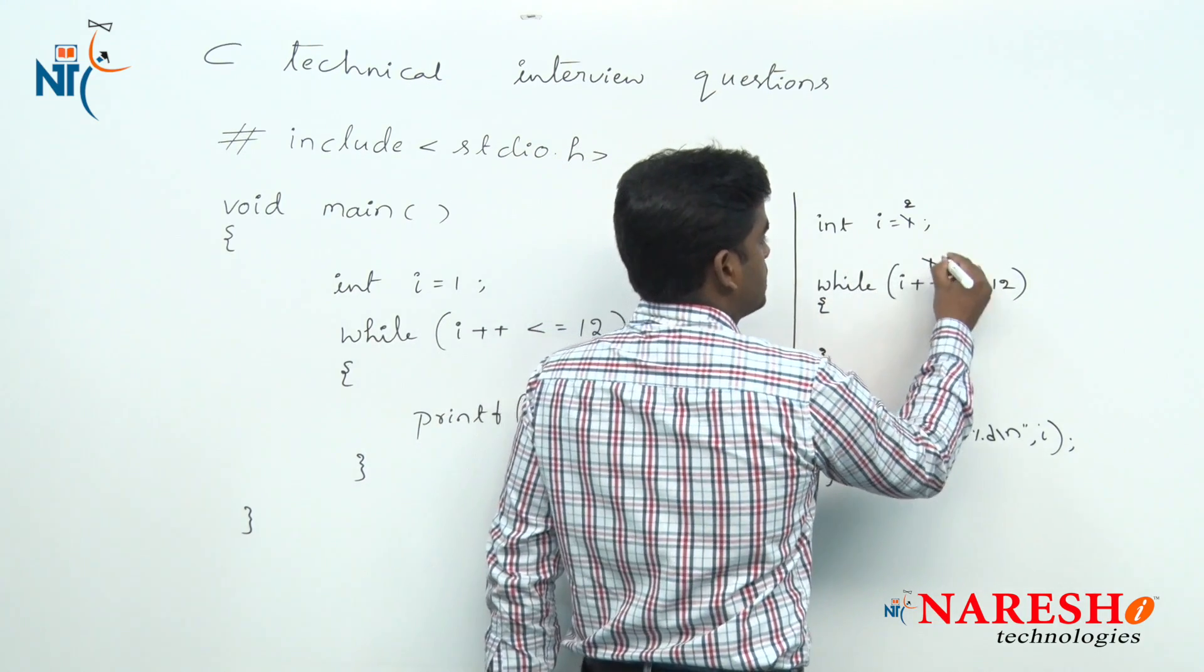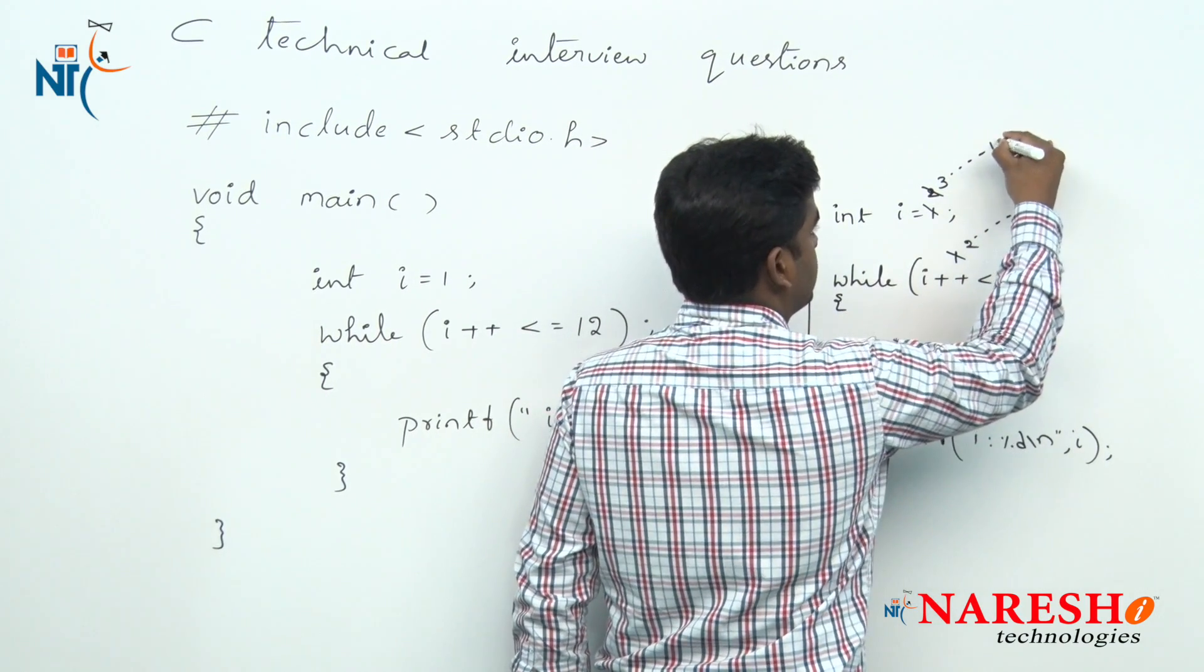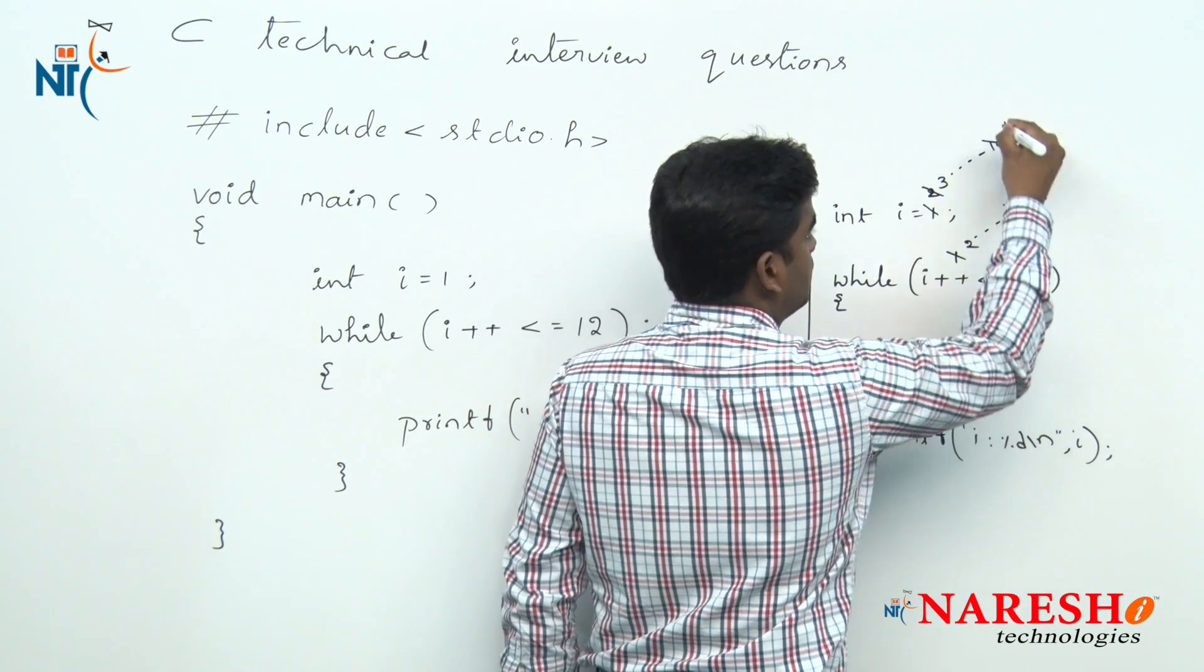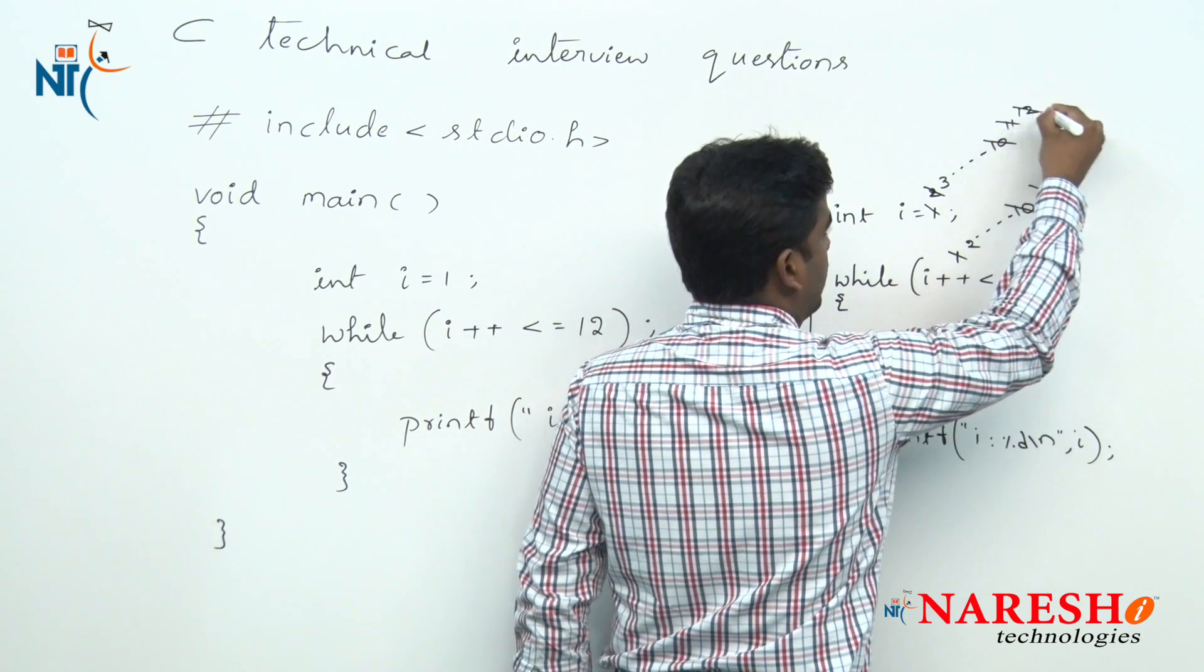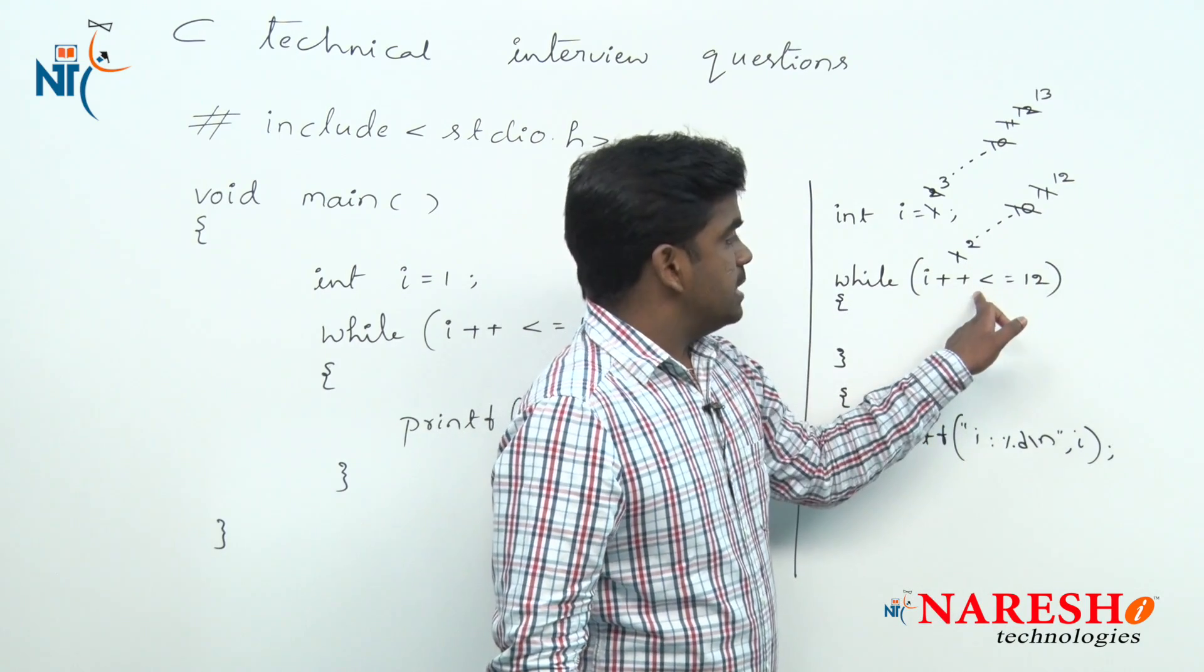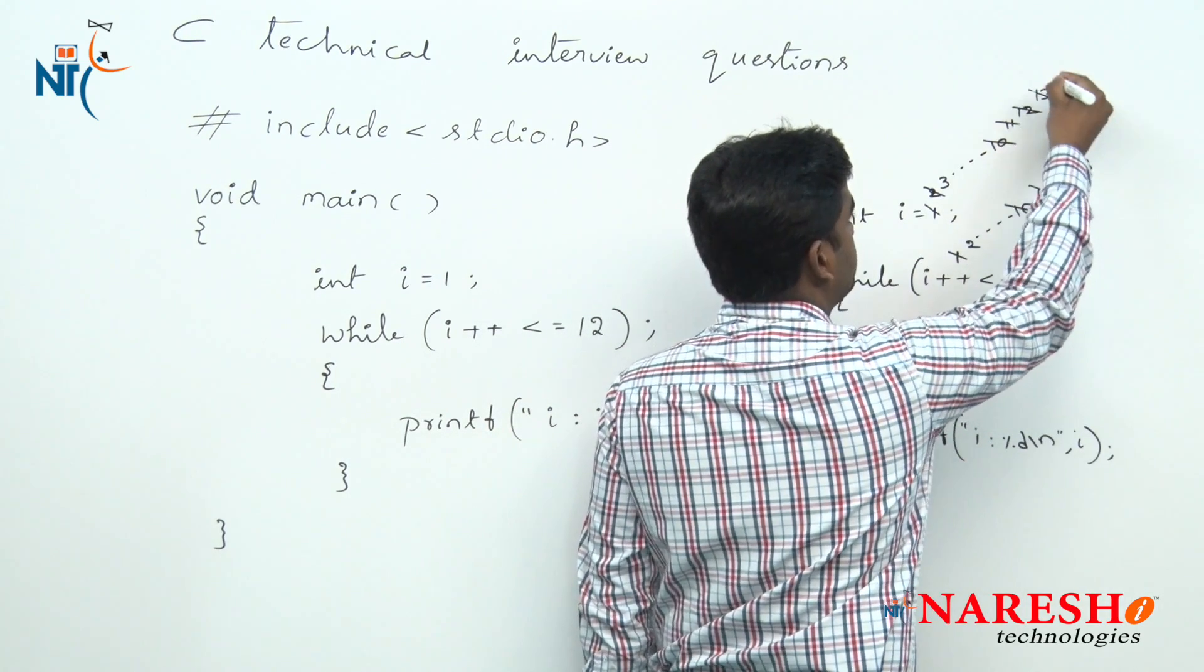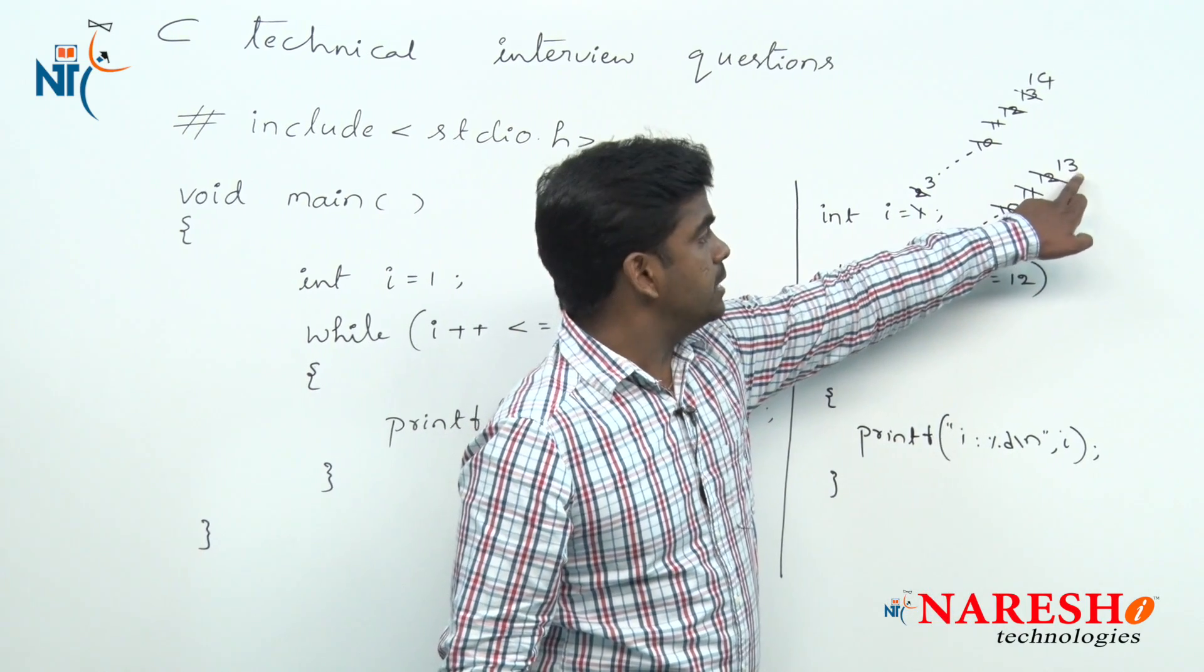First i value will be substituted 1 and the value become 2, condition true, come inside empty block executes. Again it will repeat, it will substitute 2, value become 3, like that it will go. Suppose if it is 10, it will substitute 10, value become 11, condition true. It will substitute 11, value become 12, condition true. It will substitute 12, value become 13. Here look at this, 12 is less than or equals to 12, condition true, and again it will substitute 13 but the value become 14. But here whenever 13 substituted, 13 is less than or equals to 12, the condition has failed.